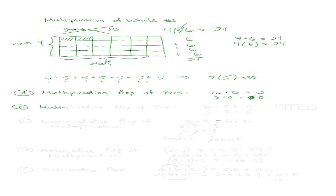This brings us to the multiplication property of 1. The multiplication property of 1 says that any number A times the number 1 is going to come out to be itself — A times 1 is A. For example, 5 times 1 would be 5. If you think back to the example, here you have one row of 5 seats: 1, 2, 3, 4, 5.